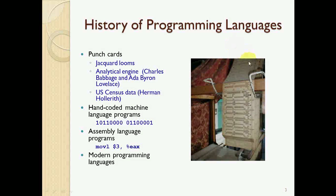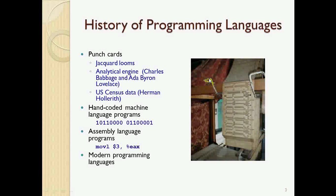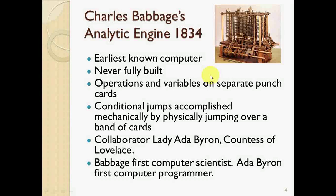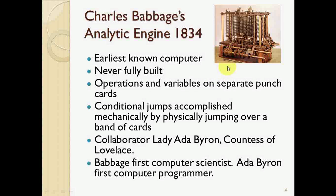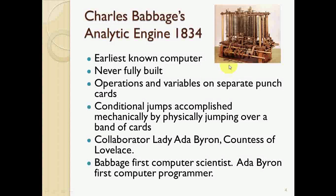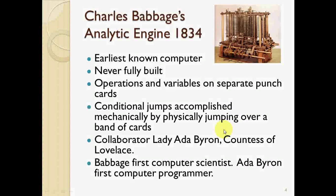Here is a brief history of programming languages. This picture shows punch cards and hand-coded machine language, assembly language, and modern programming languages. This is the Analytical Machine, invented by Charles Babbage in 1834. It was never fully built, but it had operations for variables, separate punch cards, and conditional jumps accomplished by physical mechanisms.